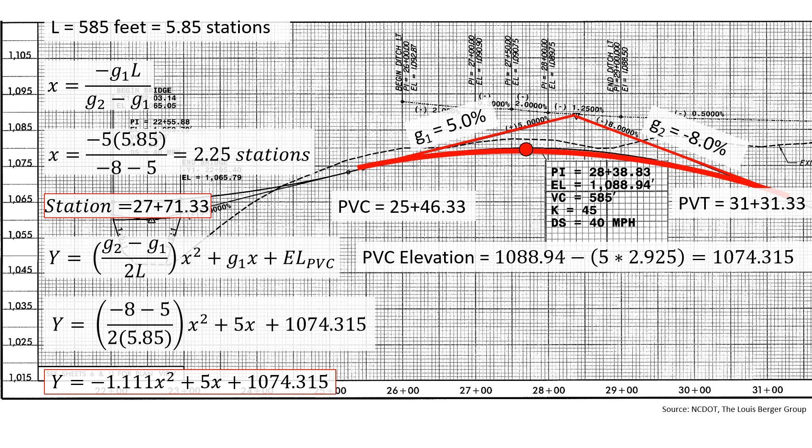We can plug our value of x for our high point into our parabolic equation. So y equals negative 1.111 times 2.25 squared plus 5 times 2.25 plus 1,074.315 gives us an elevation of our high point of 1,079.94.